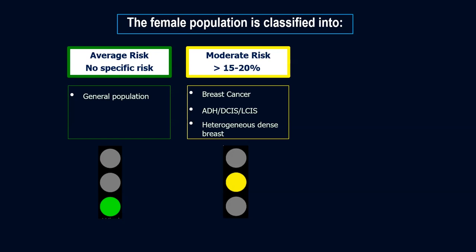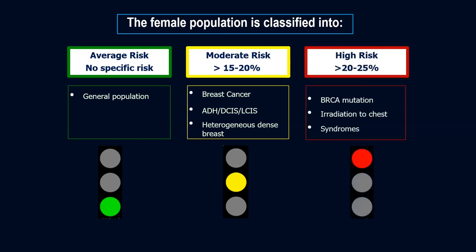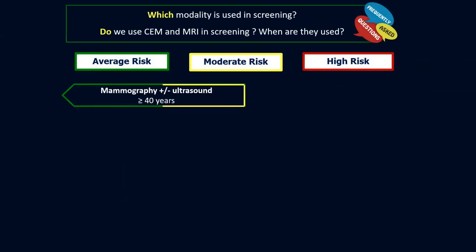Lastly, we have high-risk individuals who have an incidence of more than 20 to 25 percent above the general population to develop breast cancer. These include patients with BRCA gene mutation, those who received direct chest irradiation while young, and those with specific syndromes with genetic predispositions. For average and moderate risk individuals, we usually start screening mammography at age 40, complemented with ultrasound. For high-risk individuals, we add MRI to the screening, starting from age 35.